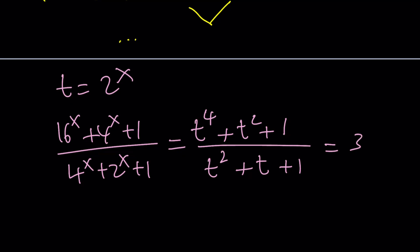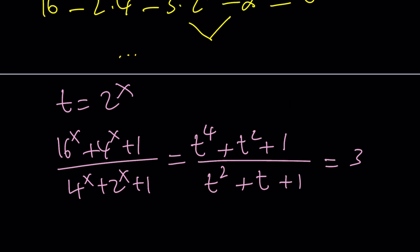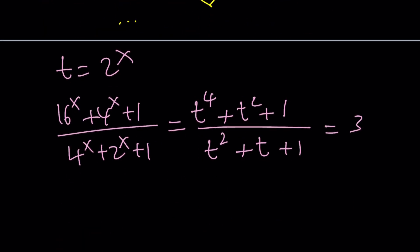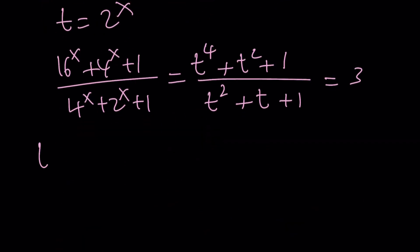Now, distributing at this point is much better than doing it with the exponentials. You could also use substitution at this point, which is going to give you the same thing, pretty much. So now let's go ahead and cross-multiply. We get t to the 4th plus t squared plus 1 equals 3t squared plus 3t plus 3.